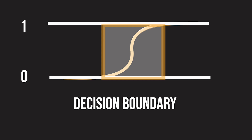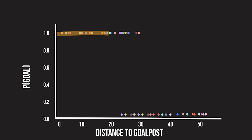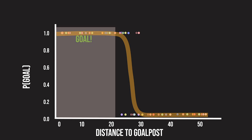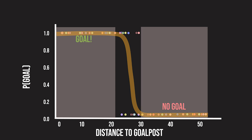Let's see how logistic regression classifies our dataset. The model is a squished line with a slanted S shape such that all predictions fall between 0 and 1. We can now interpret these predictions as probabilities. Looking at this graph, we see that the model is very confident that shots below 20 meters all end up in goals, so the prediction is 1.